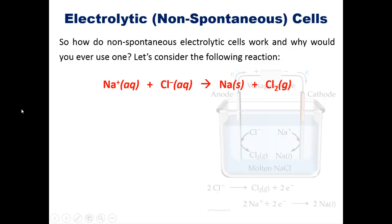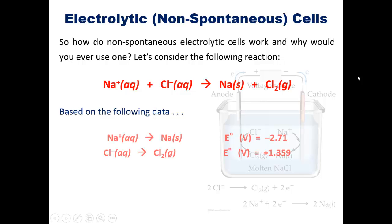If you wanted to react sodium cation with chloride anion to form individual sodium metal and chlorine gas, given the following data, that is the reduction potentials for sodium going to sodium metal and chloride going to chlorine gas, is this reaction spontaneous?